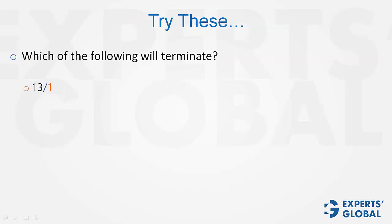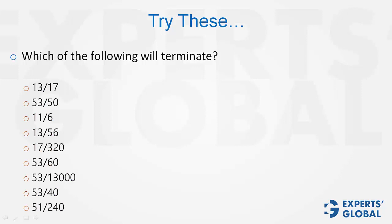Look at these questions. Please pause the video and try these. The first question has a 17 in the denominator, so this is not going to terminate. 50 has only 2s and 5s as its prime factors, and therefore, this fraction is going to terminate.